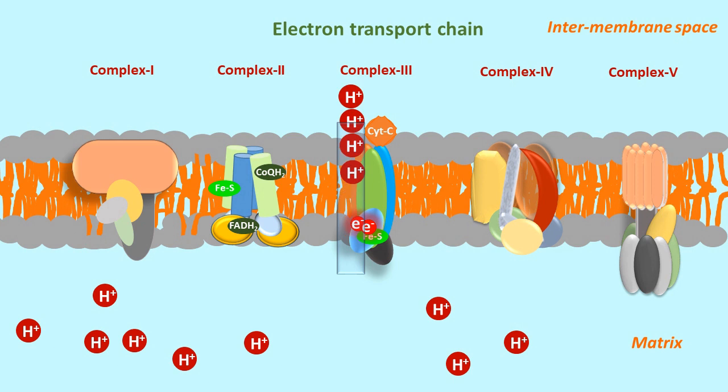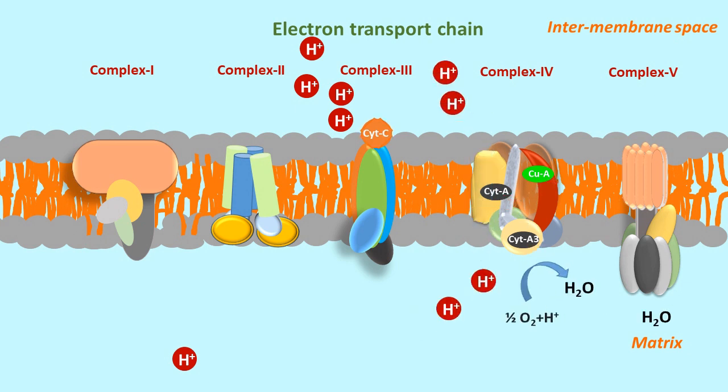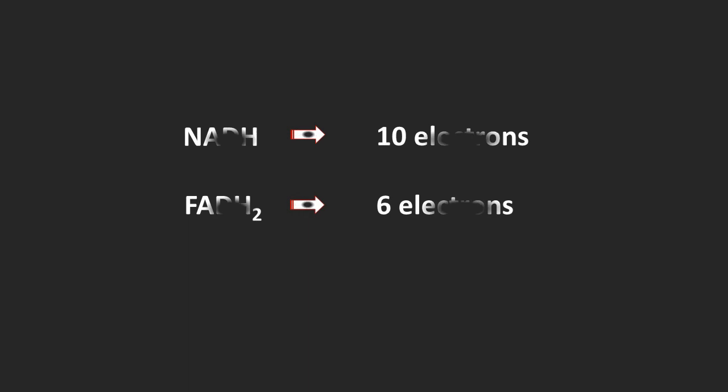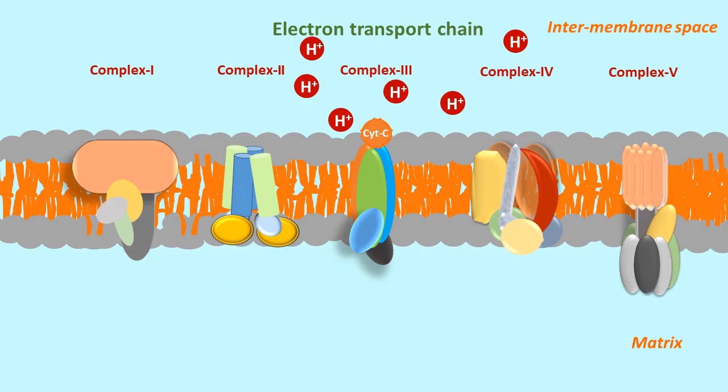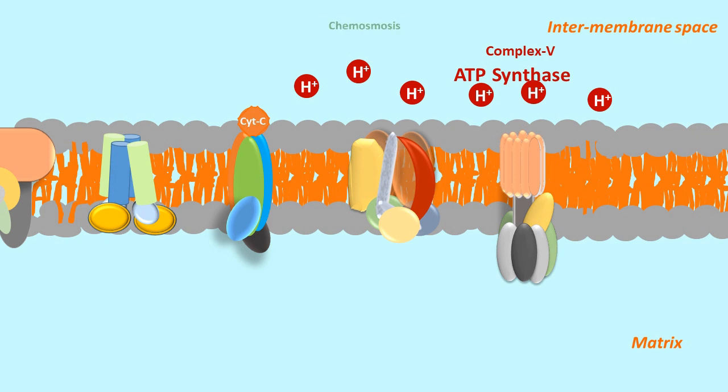Henceforth, all other reactions are same as that of NADH. 4 protons are pumped into the intermembrane space in complex 3 and 2 in complex 4. Here you see complex 1 is not involved in the process. So, a total of 6 protons are pumped in FADH2 oxidation process, which are 4 protons shorter than NADH oxidation.